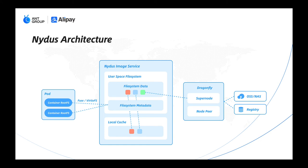This is the architecture of Nydus. It is a userspace-based daemon. It contains a userspace-based file system and an optional local cache. Through the FUSE and VirtioFS protocol, it supports running both RunC and Kata containers. The userspace file system stores its data and metadata in different storage backends, for example, OSS, NAS, registry, and Dragonfly P2P network. When a container accesses its image data, Nydus will first look at the local cache, and if it's not there, it can fetch it from the storage backend.